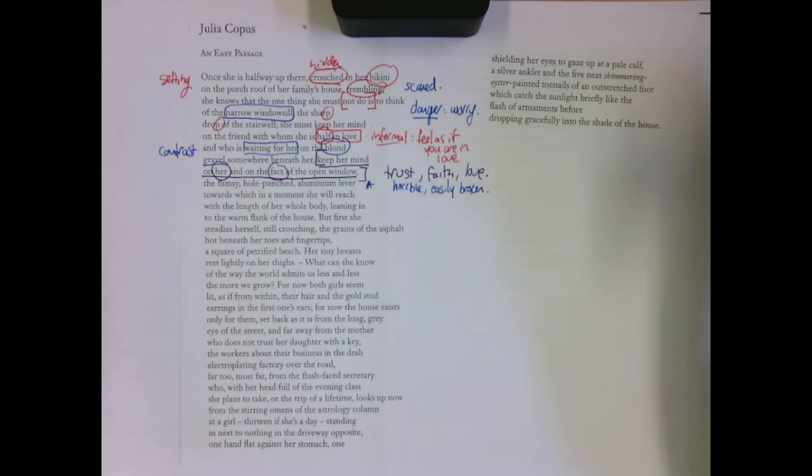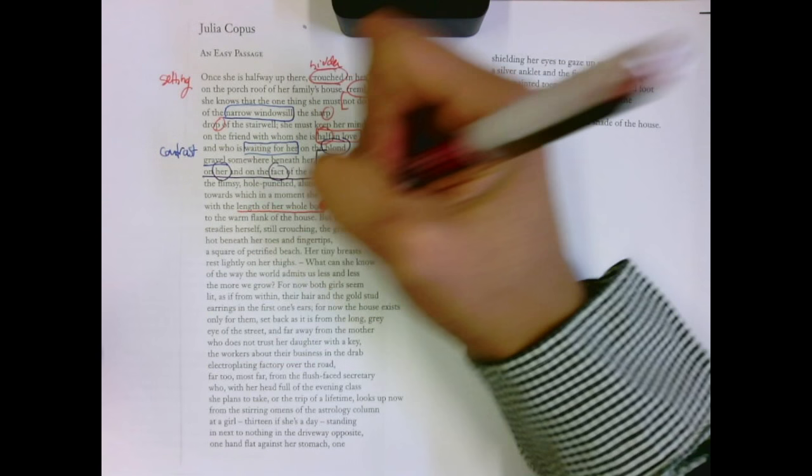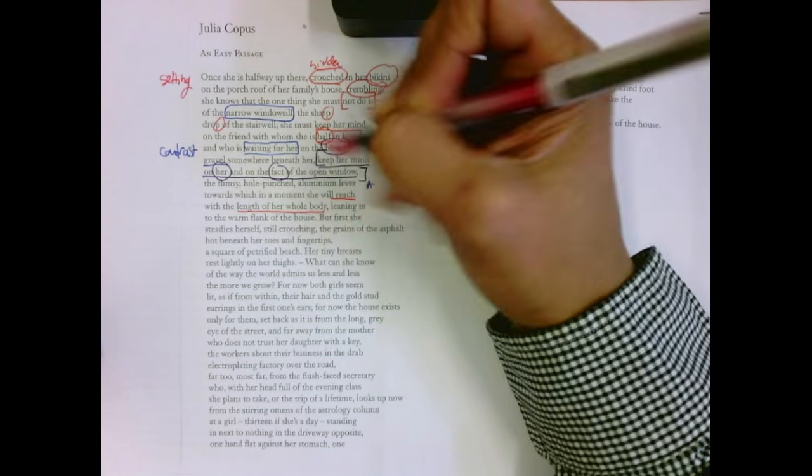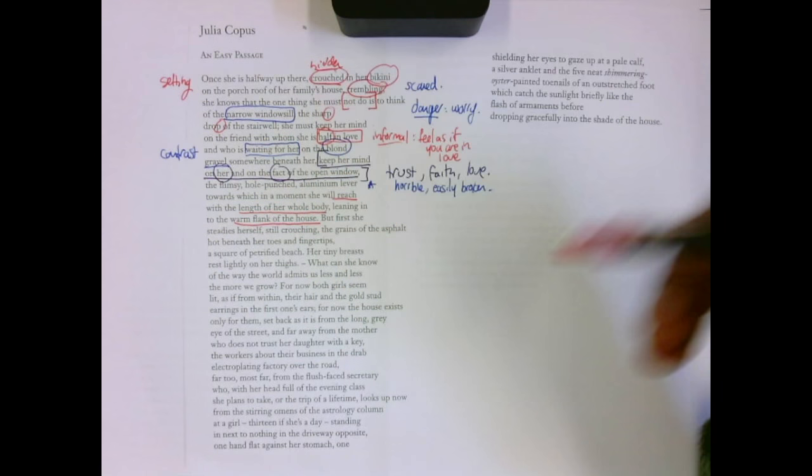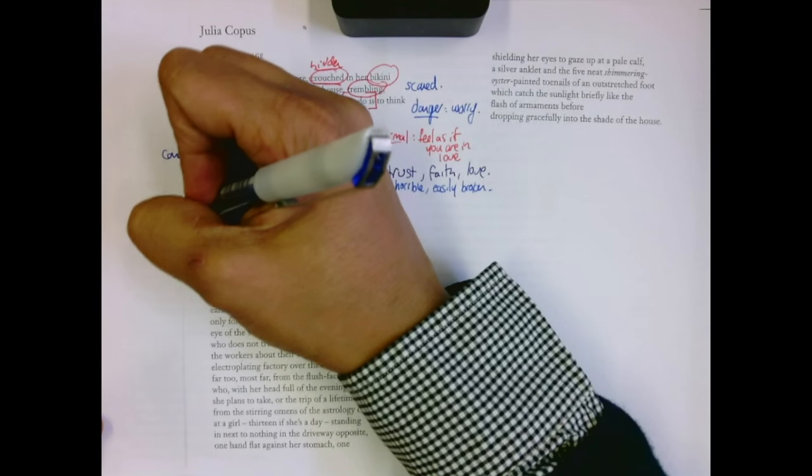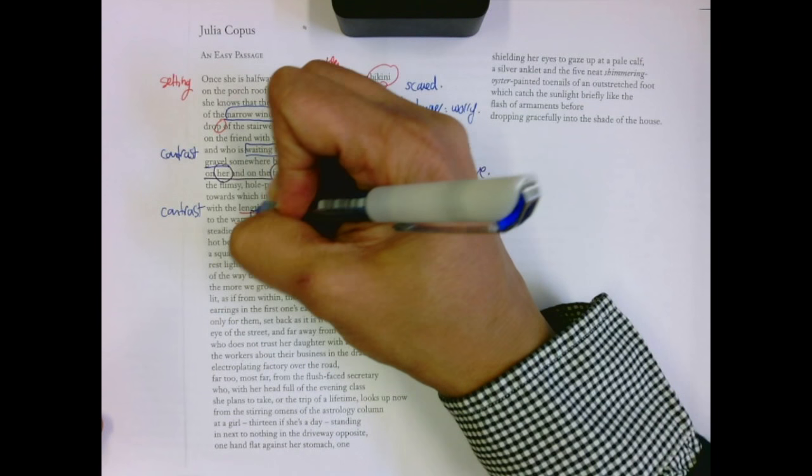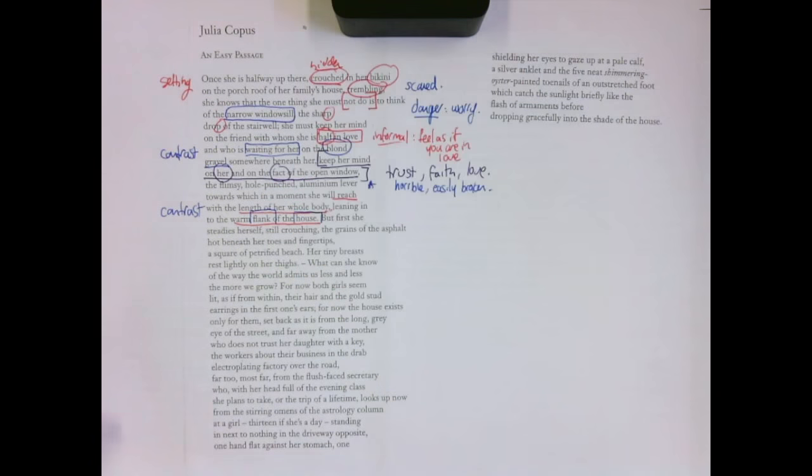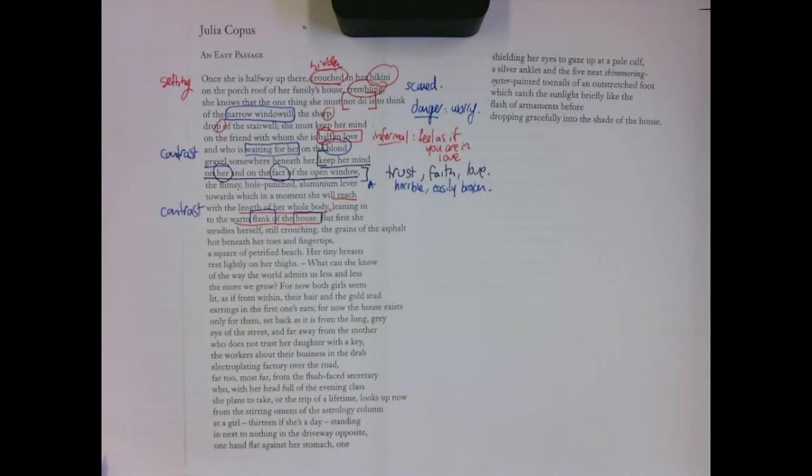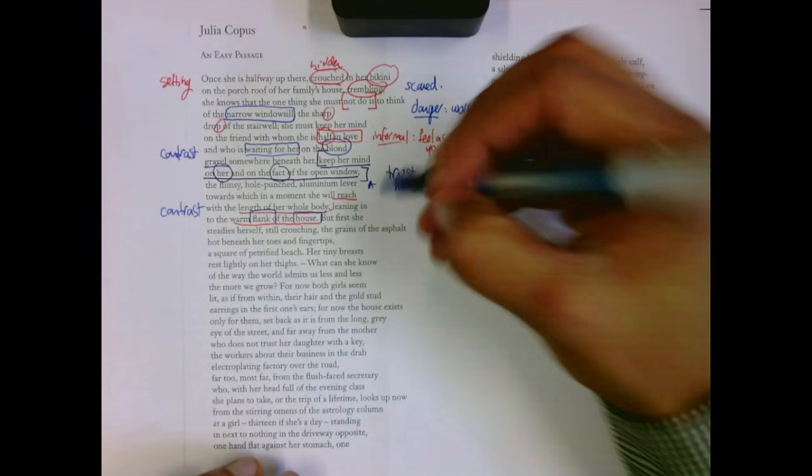I think, again, now, the length of her whole body leaning in the warm flank of the house. So we get another further contrast. So actually, it's not the... Inside the house is the flank. Like, it's... I'm just going to look up flank. I'm going to pause this for a second. Flank means to the side, the warm side of the house. We have the setting, this trembling moment in between. Downstairs we have the blonde gravel, the friend we're half in love with, and inside is the warm flank, the safety. I think that suggests safety of the house.